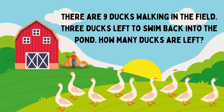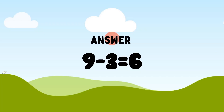Next question. There are 9 ducks walking in the field. 3 ducks left to swim back into the pond. How many ducks are left now? Total 9 ducks minus 3 ducks. 9 minus 3 is equal to 6. So, 6 ducks left now.